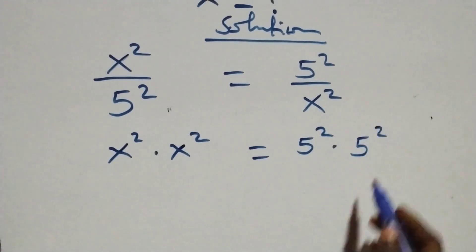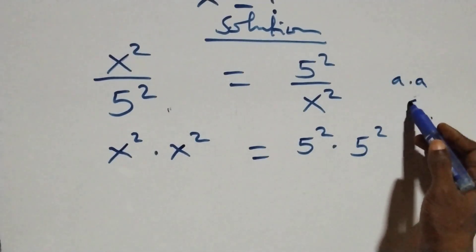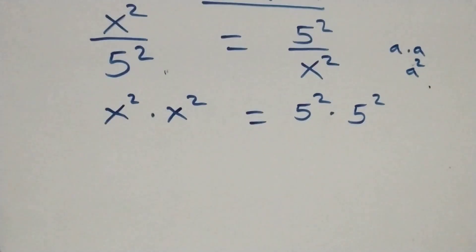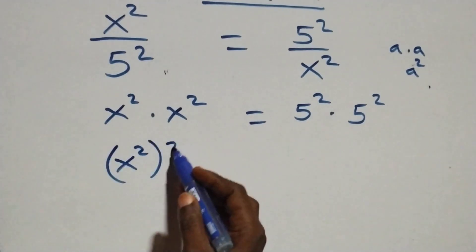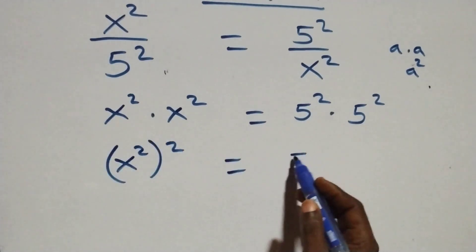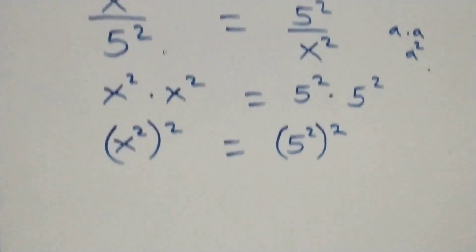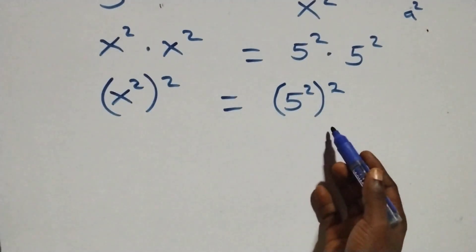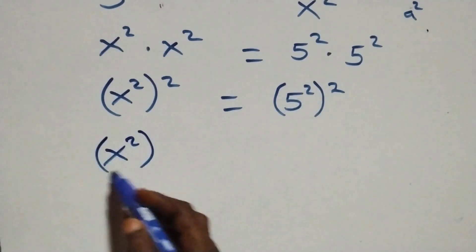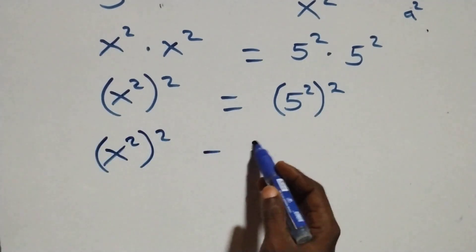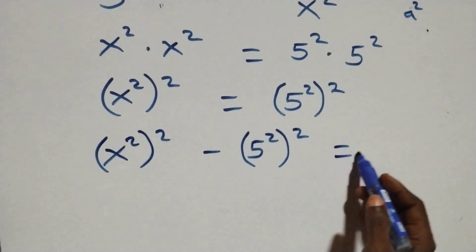From here, the same thing: multiplying, just like when we have a times a is a squared. So we can write this as (x squared) squared equals (5 squared) squared. Then taking the right-hand side to the left-hand side, this becomes (x squared) squared minus (5 squared) squared equals 0.